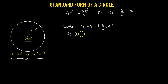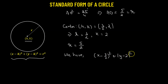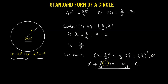Let's use the standard form. For a circle with center (h, k) and radius r, the standard form is (x − h)² + (y − k)² = r². In our case, h = 3/2 and k = 2, and r = 5/2. Substituting: (x − 3/2)² + (y − 2)² = (5/2)². Simplifying, this gives us x² + y² − 3x − 4y = 0, which is the equation of the circle.